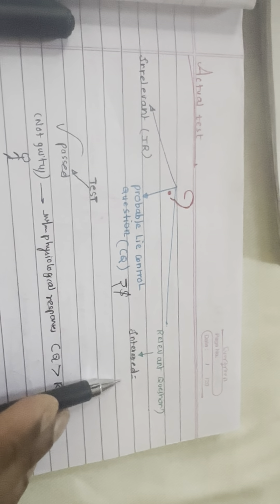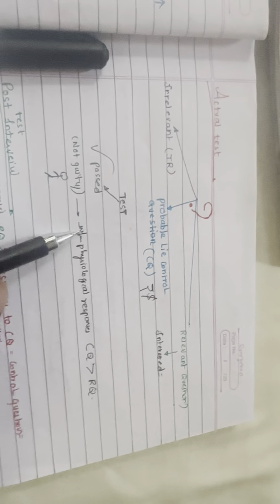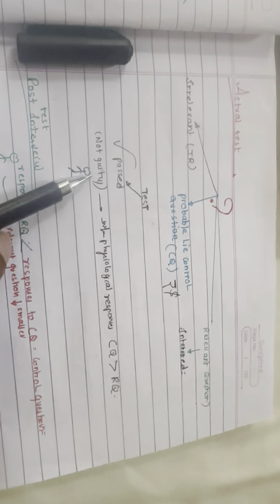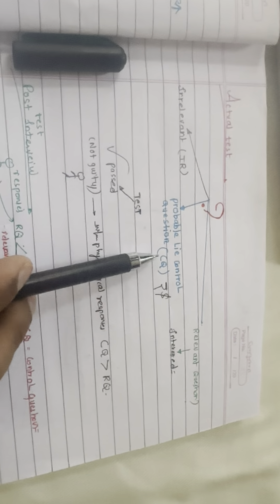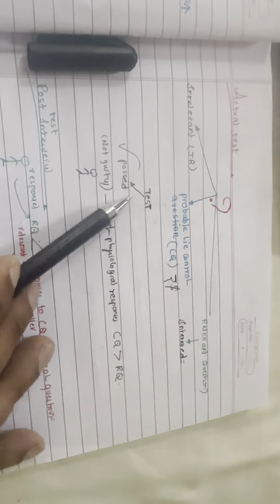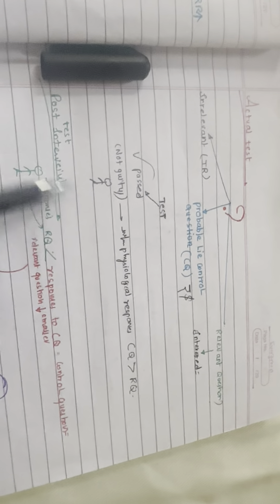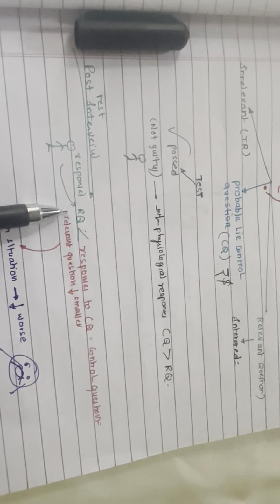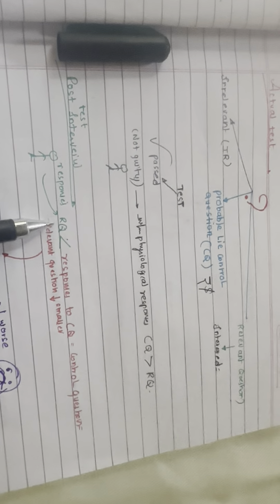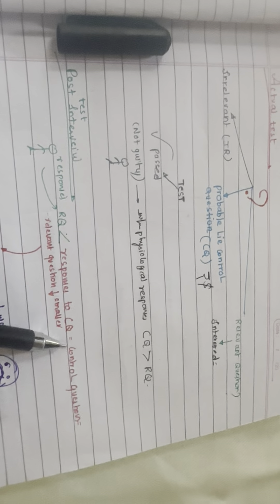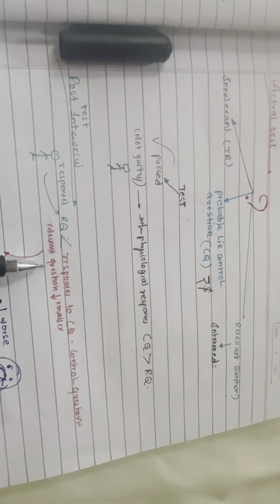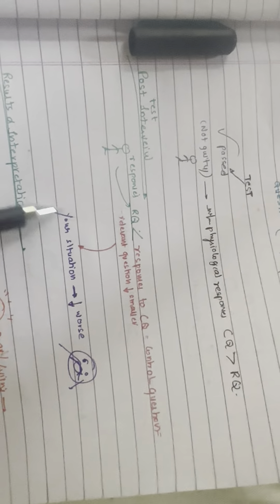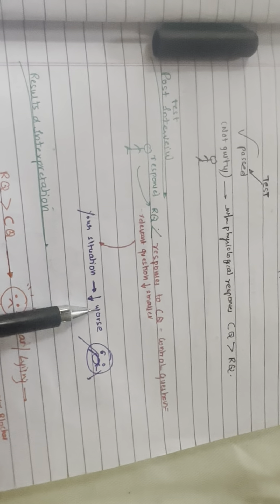The different types of questions alternate during the test. The test is passed if the subject is not guilty — that is, if the physiological responses during the probable lie controlled questions are larger than those during the relevant questions. In the post interview, if responses to RQ are smaller than those to probable like controlled questions, the tester attempts to elicit a confession, saying things like 'Your situation will only get worse if you don't clear this up.'